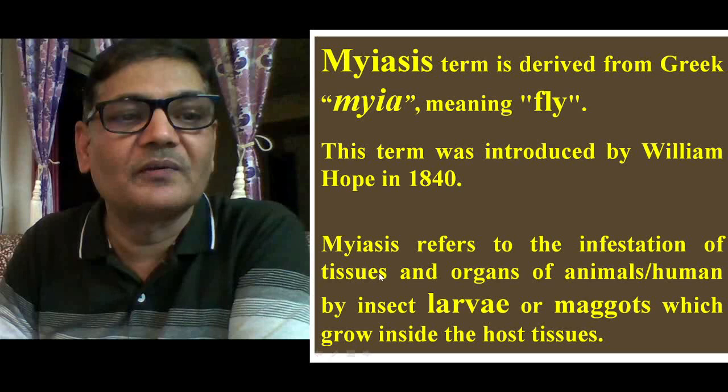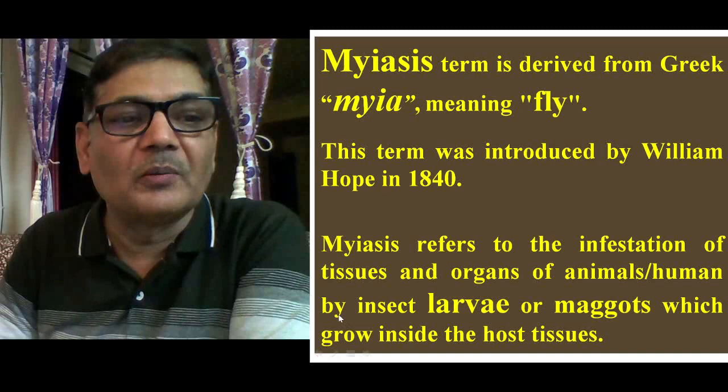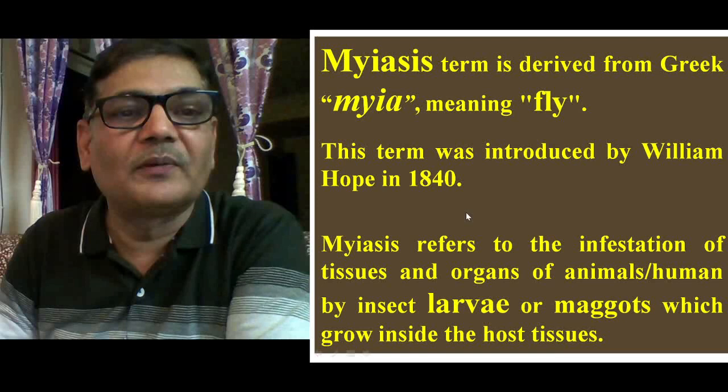Meiosis refers to the infestation of tissues and organs of animals, even human beings, by insect larvae or their maggots, which grow inside the host tissues.